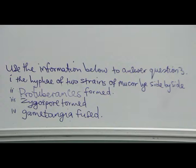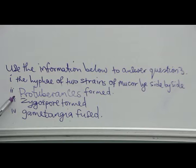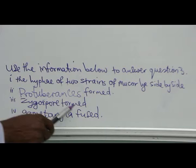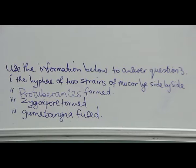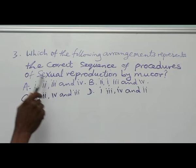Use the information below to answer question 3. The information is: 1. The hyphae of two strains of Mucor lying side by side. 2. Protuberances formed. 3. Zygospore formed. 4. Gametangia fused. Which of the following arrangements represents the correct sequence of sexual reproduction by Mucor?